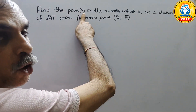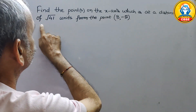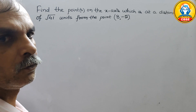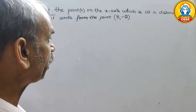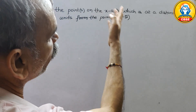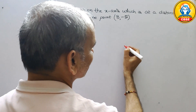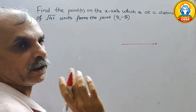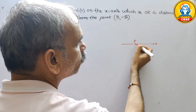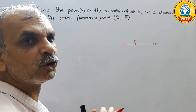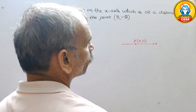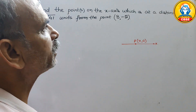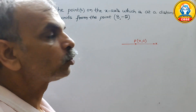Find the point or points on the x-axis which is at a distance of root 41 units from the point (8, -5). They have told point or points on the x-axis, so suppose this is your x-axis which is at a distance of root 41 units from the point (8, -5).